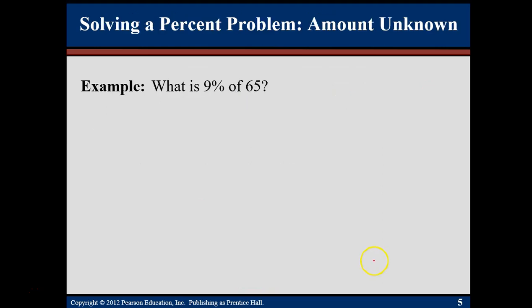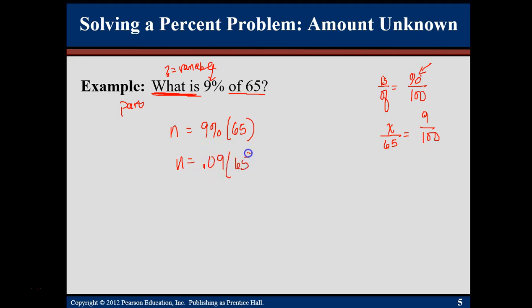Let's look at a couple examples. What is 9% of 65? This is where is over of equals percent over 100 comes in handy. If you have a percent sign, then you know where that's going to go. That's a 9. Then you're going to look for what's next to the is and the of. It says of 65. The what is with the is, and the what is the variable. If you're looking for a what is, that's a part. So this is going to be n equals 9% times 65. Of course, you can't multiply it by a percent, so it has to be .09 times 65. .09 times 65 is 5.85.